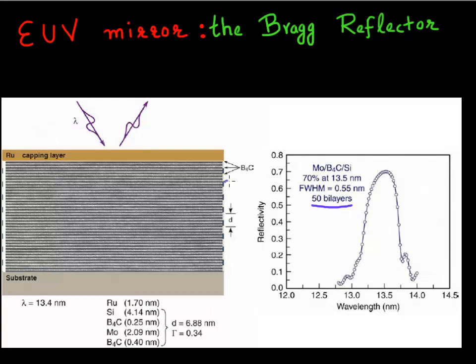And each of these bilayers is composed of a layer of silicon, which is a few nanometers thick, and a layer of molybdenum, which is again a few nanometers thick.